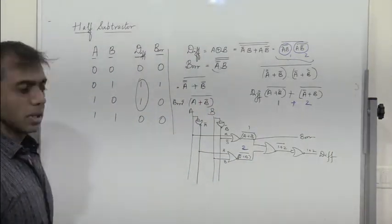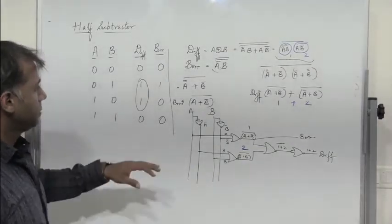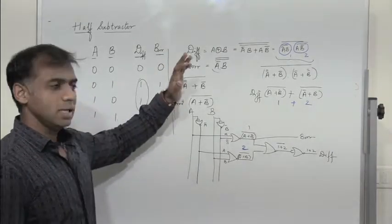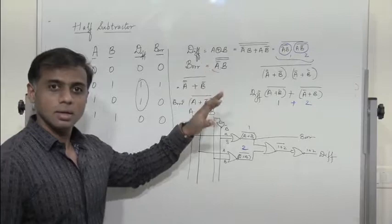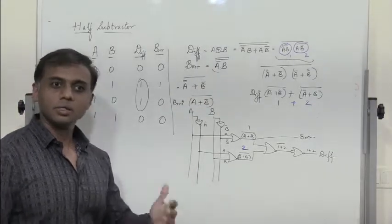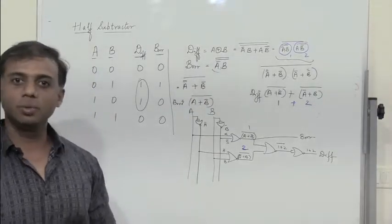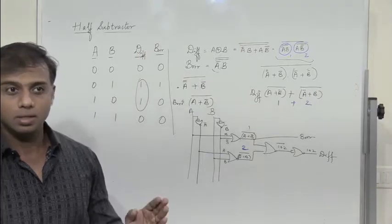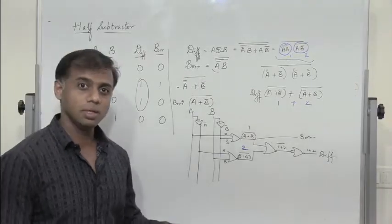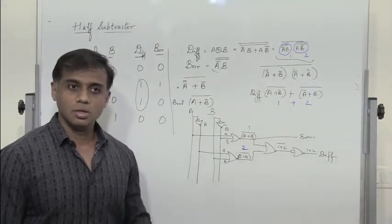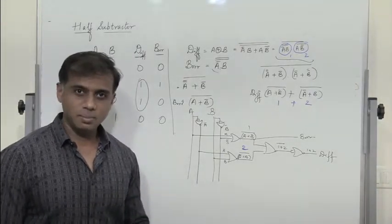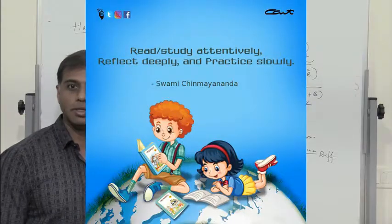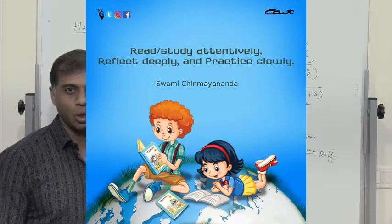This is how we implement difference and borrow using NOR gates. In the next segment, we will discuss a full subtractor — its truth table, implementation using basic gates, NAND gates, as well as NOR gates.